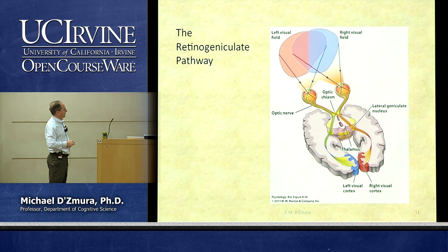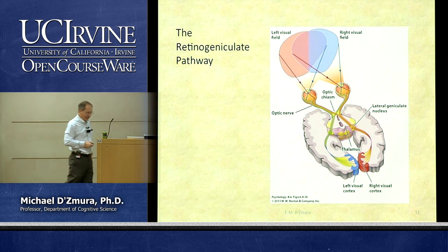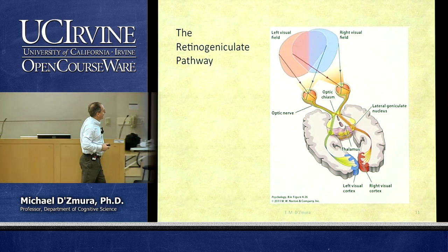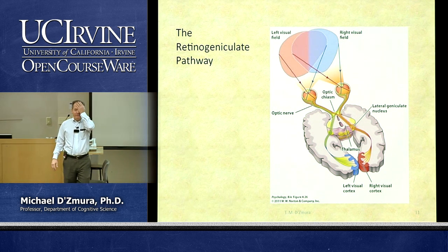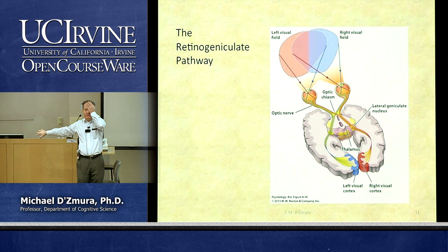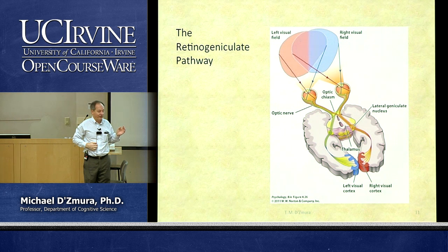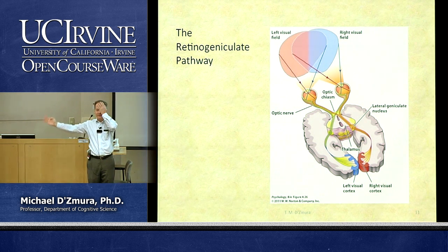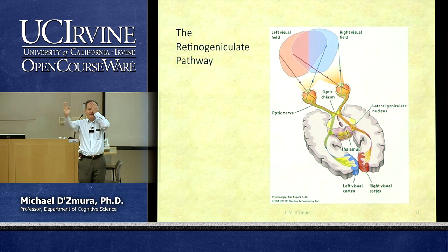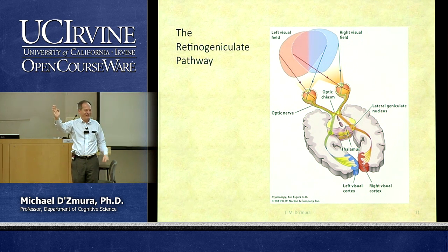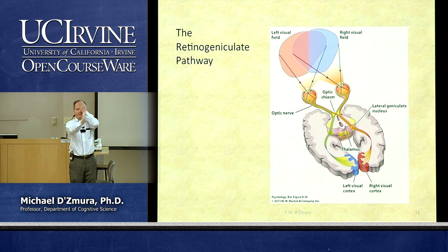Some axons from retinal ganglion cells in the left and right eye must cross over, so that the left side of the visual field is represented on the right side of the brain and vice versa. Each eye can see both sides of the visual field. To achieve a true contralateral representation, retinal ganglion cell axons responding to one side must cross to the other side of the brain, while those responding to the same side stay on the same side.